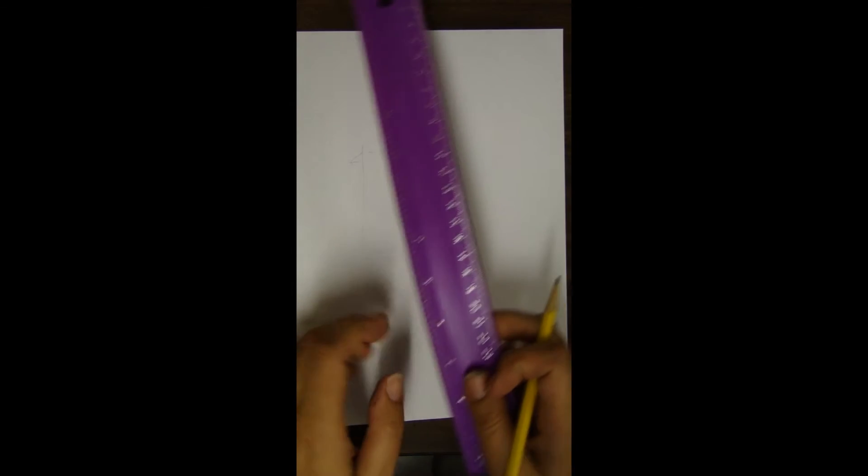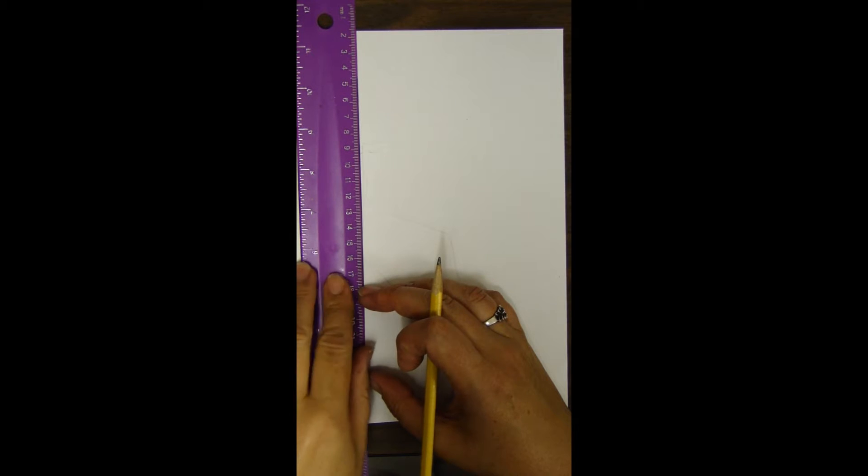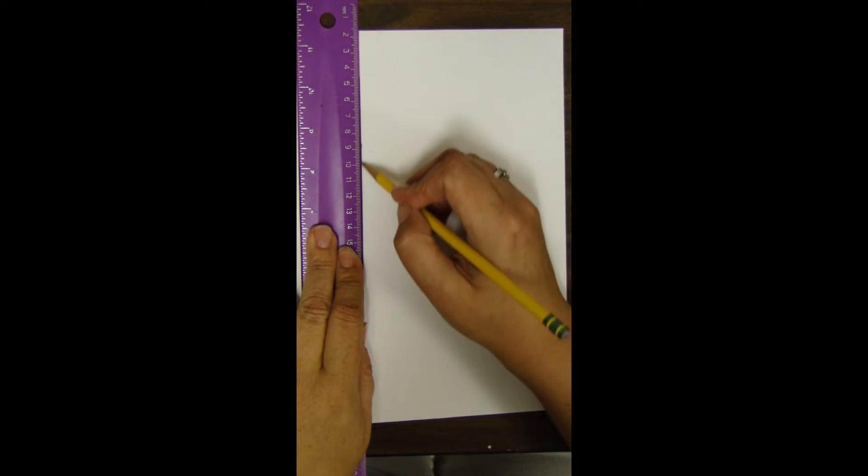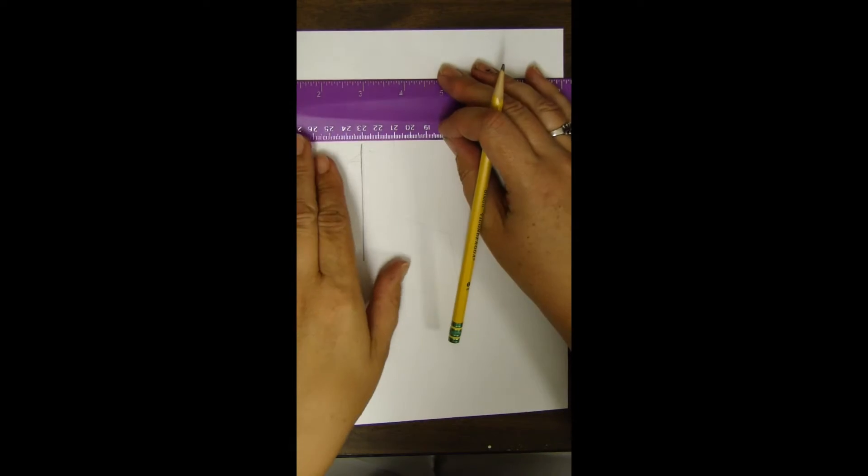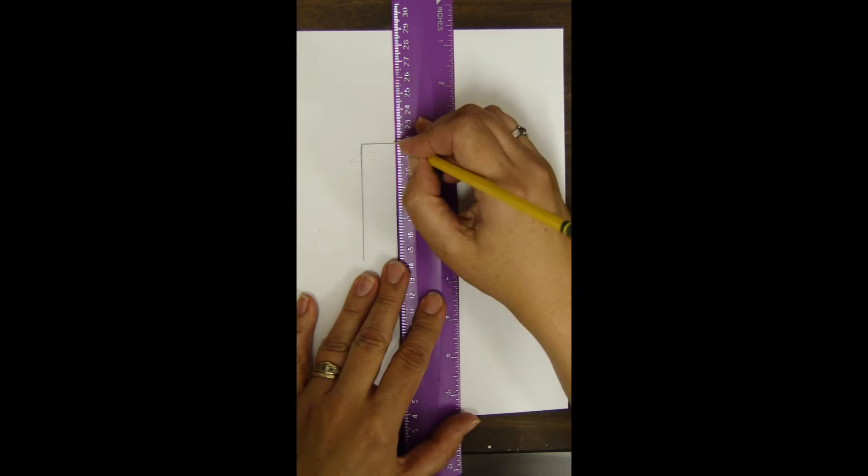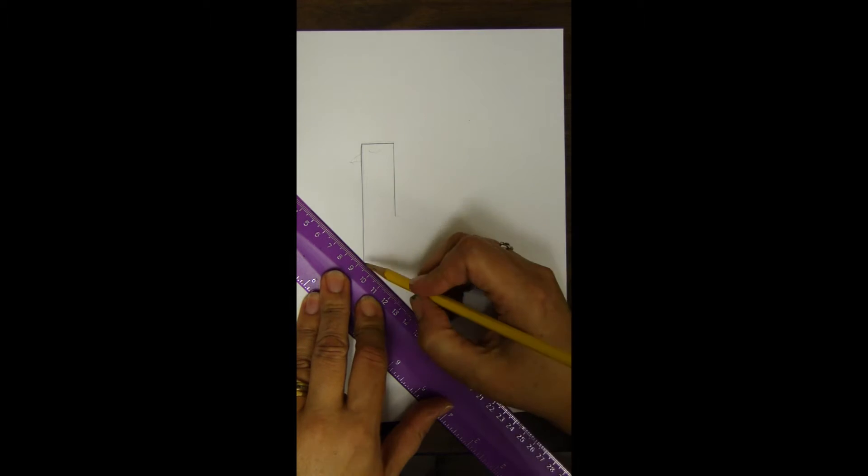I am going to start by drawing in the body of the peacock using my ruler to make a nice clean straight edge. The body kind of resembles the lowercase letter B. As you can see I'm drawing the back of what looks like the B and next I'll draw in the belly part.